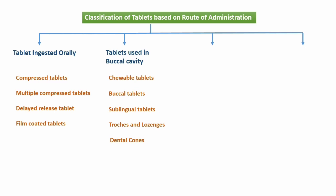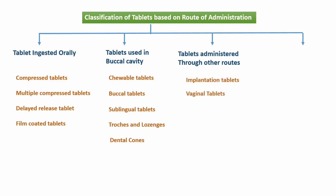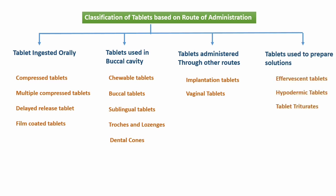The third category includes tablets administered through other routes like implantable tablets, vaginal and rectal tablets. The fourth category includes tablets used to prepare solutions — in this come effervescent tablets, hypodermic tablets, and tablet triturates.